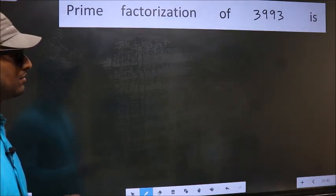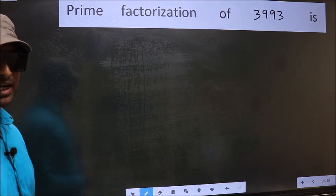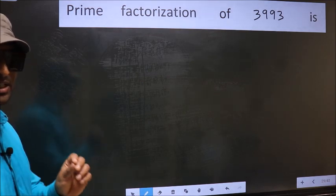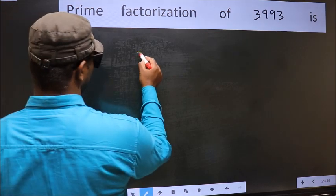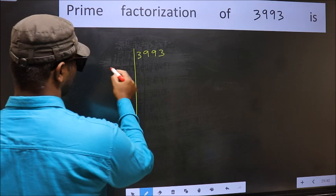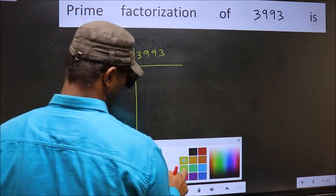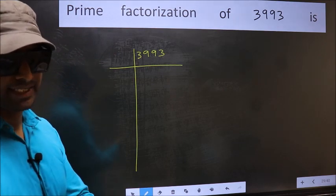Prime factorization of 3993. To do prime factorization, first we should frame it in this way. 3993. This is step 1.